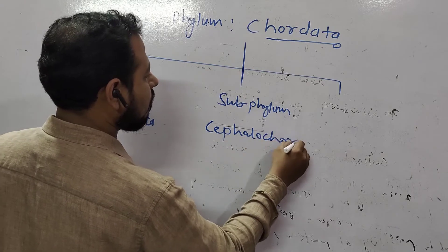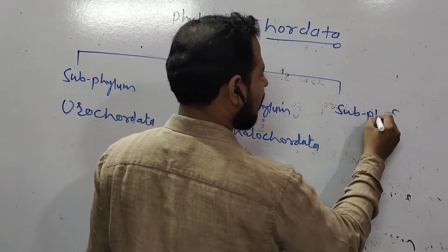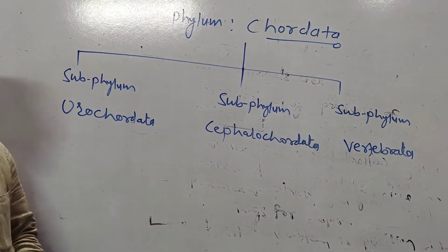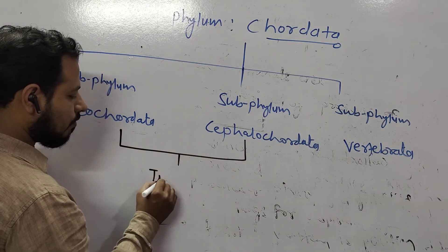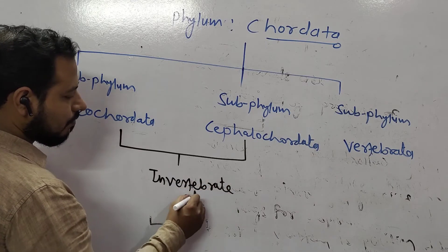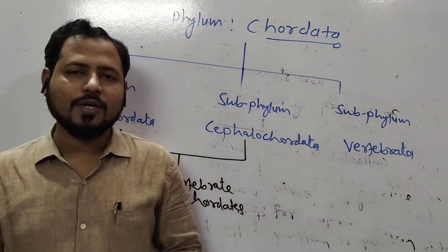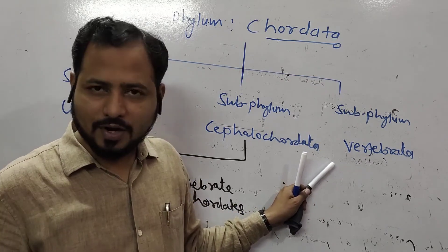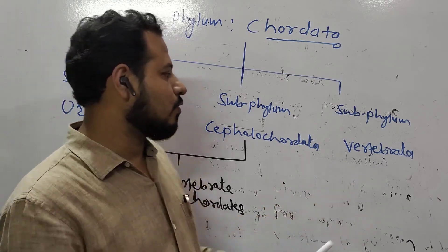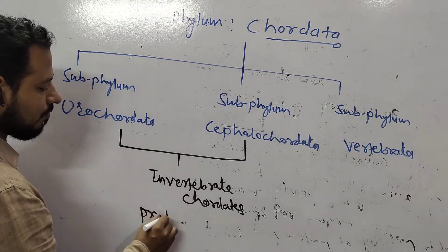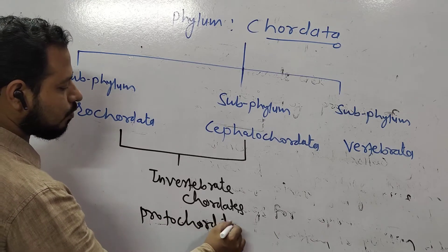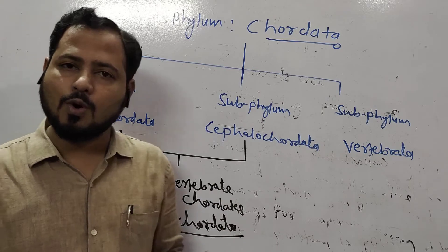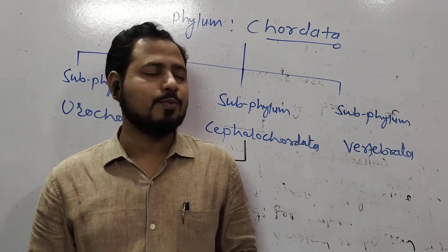Urochordata and Cephalochordata are called invertebrate chordates, as they do not possess a vertebral column. Those with a vertebral column are called vertebrates. Urochordata and Cephalochordata are collectively called Protochordata or invertebrate chordates. Instead of a vertebral column, they show notochord at least for some stage of life — that is the essential condition to be called a chordate.